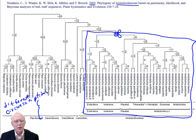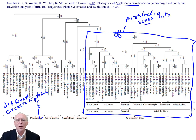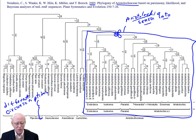We have a monophyletic group, and that is, in a large sense, the genus Aristolochia. We say Aristolochia sensu lato — in the large sense. All of those taxa come into Aristolochia in the large sense.